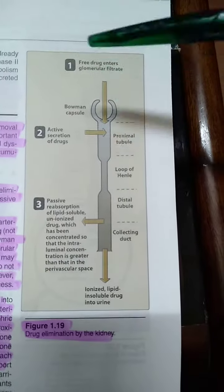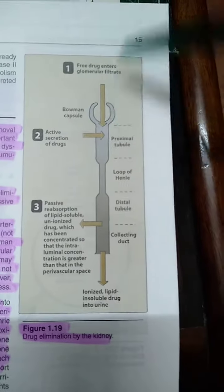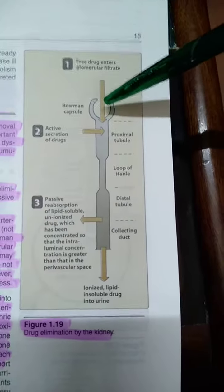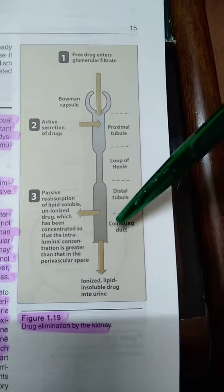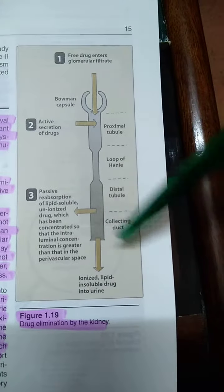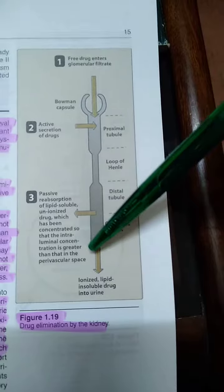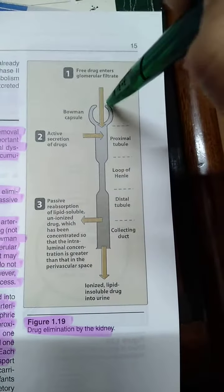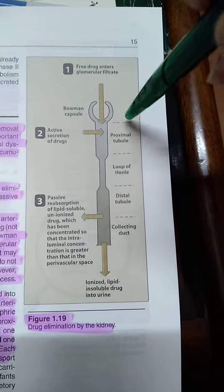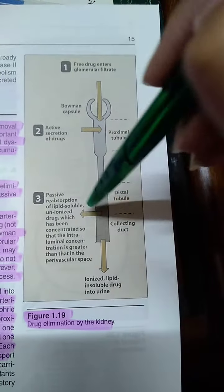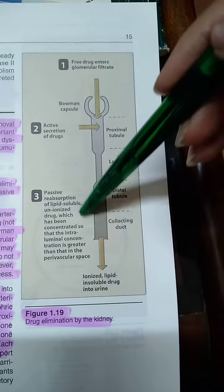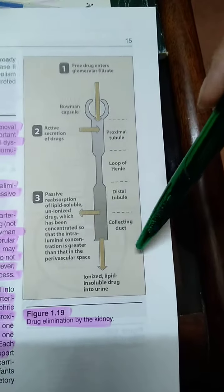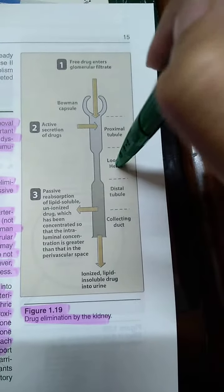Now we're going to study how a drug is moved through different phases of the kidneys to finally be excreted out in the form of urine. This movement from the kidney to the collecting duct consists of three phases.